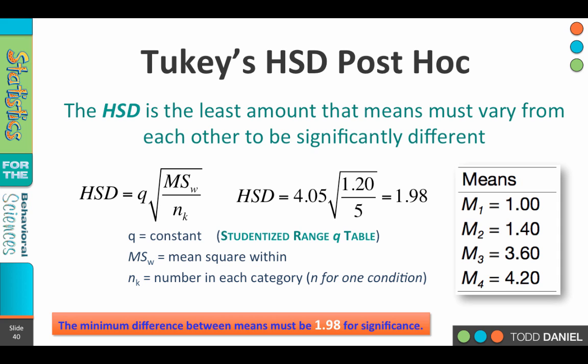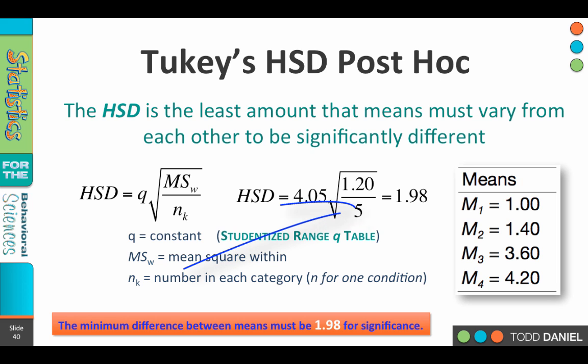The way we will complete our HSD formula is to plug in our Q value — that constant we got from the studentized ranged Q table — which was 4.05. We multiply that by the square root of the mean square within, 1.20, which also comes from the ANOVA summary table. And N sub K is the number of participants in each category, or the N for one condition. There were five scores in each category, so that's where the five comes from.